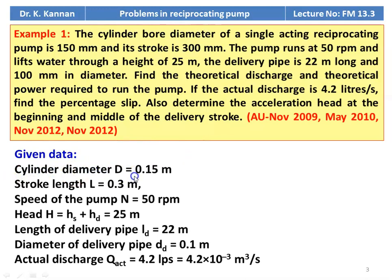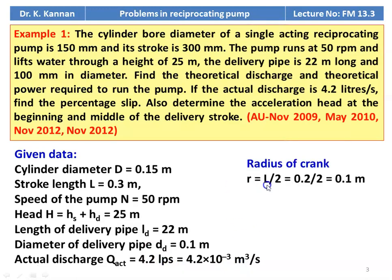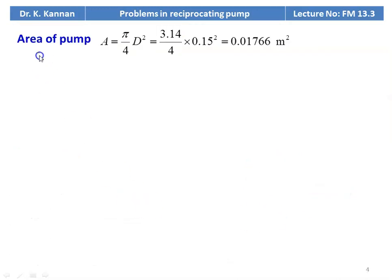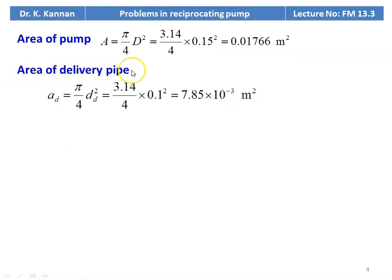Given: cylinder diameter D = 0.15 m, stroke length L = 0.3 m, speed N = 50 RPM, suction head plus delivery head H = 25 m, length of delivery pipe LD = 22 m, diameter of delivery pipe DD = 0.1 m, actual discharge = 4.2 liters per second = 4.2×10⁻³ m³/s. Radius of crank R = L/2 = 0.3/2 = 0.15 m. Area of piston A = π/4 × D² = 3.14/4 × 0.15² = 0.01766 m². Area of delivery pipe AD = π/4 × DD² = 3.14/4 × 0.1² = 7.85×10⁻³ m².